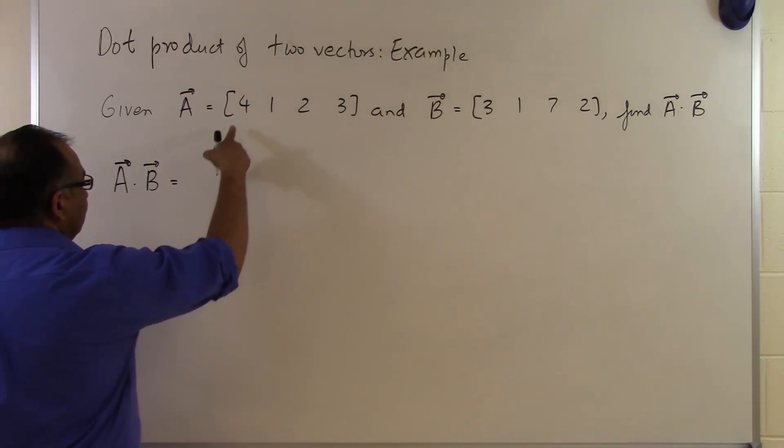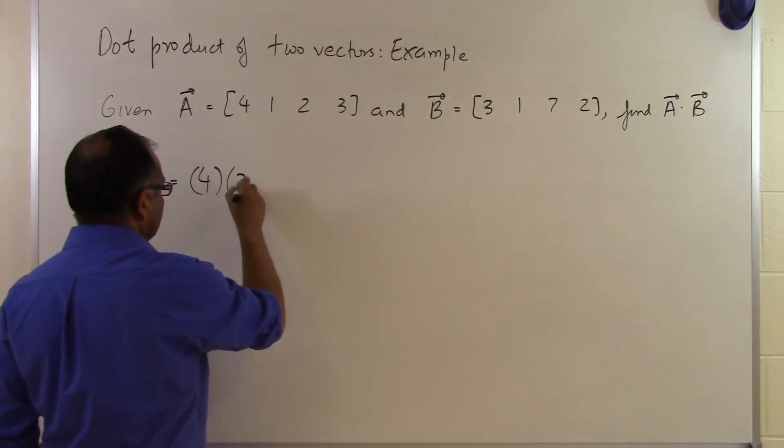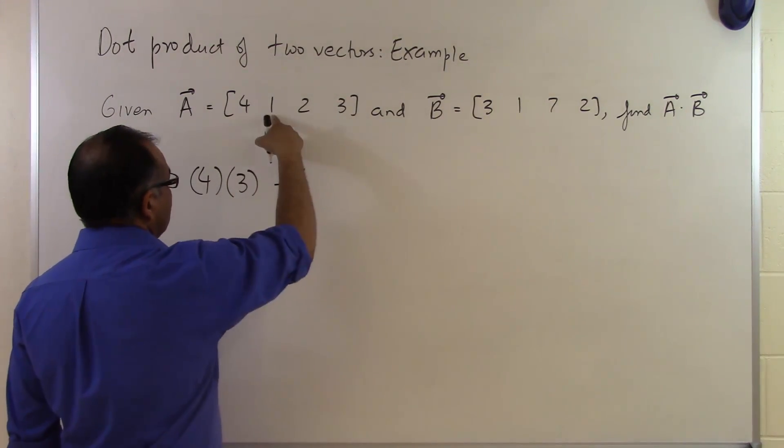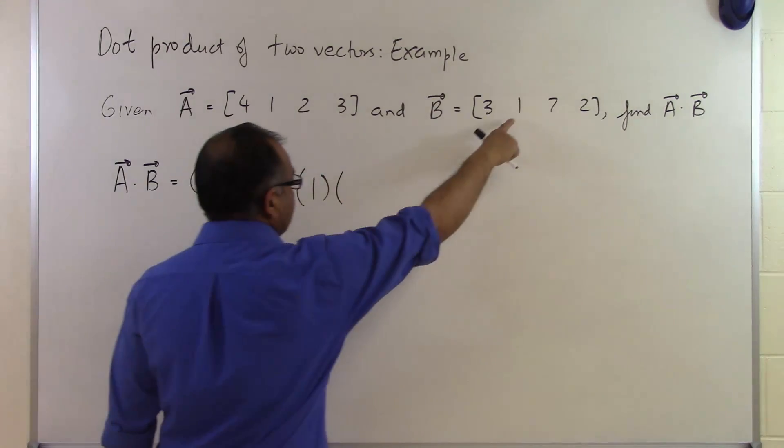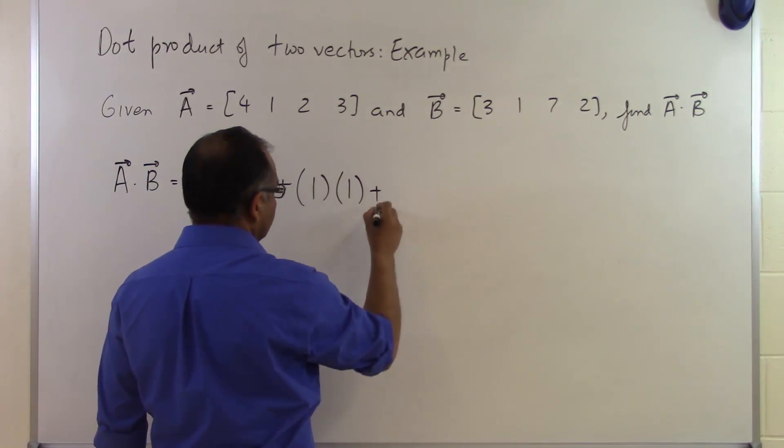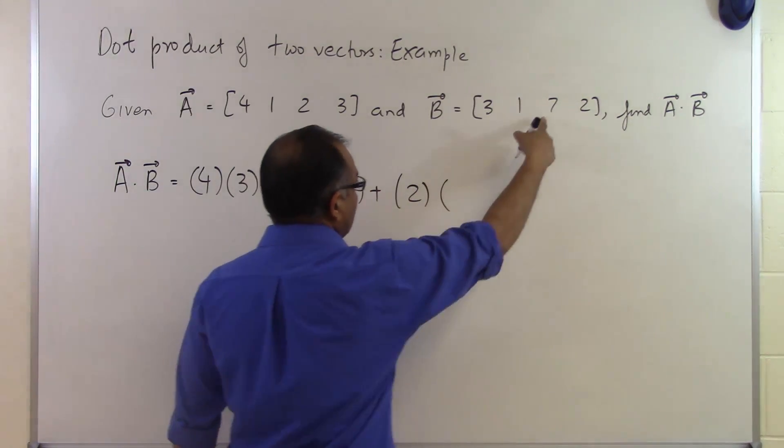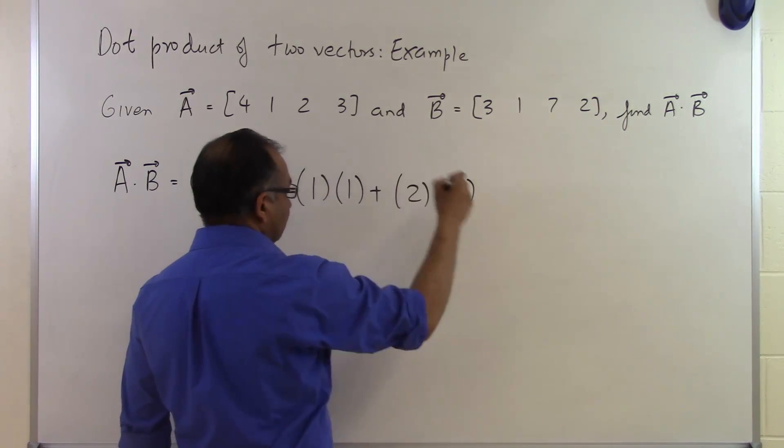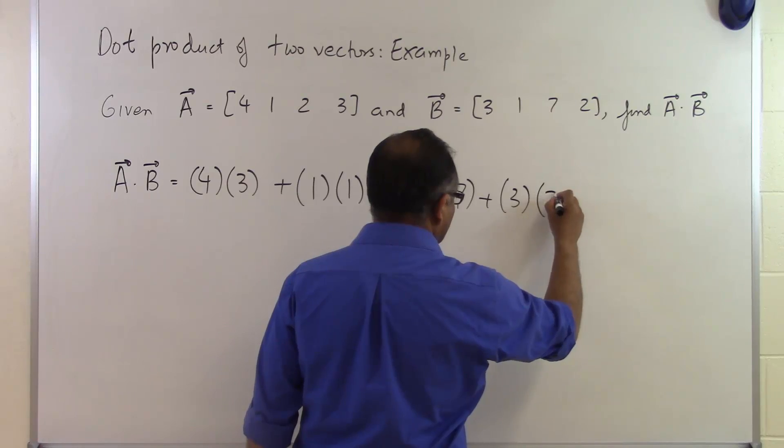So if we look at the first component here is 4, and the first component here is 3. The second component here is 1, and the second component here is 1. Third component here is 2, third component here is 7. Fourth component here is 3, fourth component here is 2.